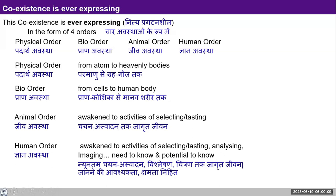Then there is a more complex order — the human order. In the human order, the body belongs to the bio order. But the self, which now associates with the human body, is awakened to more activities — not just selecting and tasting, but even analyzing and imaging. And as part of our self-organization, we have a need to know, and we have a potential to know also. You can see how progressively this coexistence is expressing itself, with characteristics becoming more and more complex and advanced.